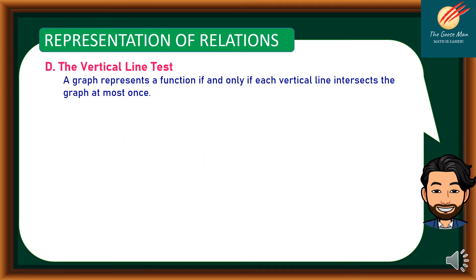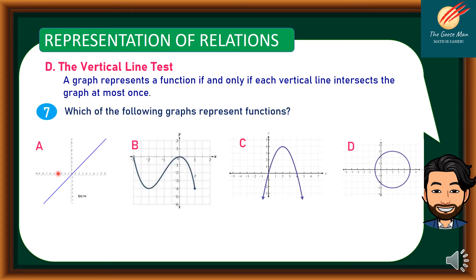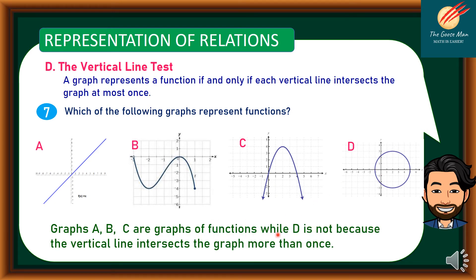The fourth type of representation is the vertical line test. A graph represents a function if and only if each vertical line intersects the graph at most once. Looking at graphs a, b, c, and d: a vertical line touches graphs a, b, and c only once each. However, for graph d, the vertical line touches the graph at two points. So graphs a, b, and c are graphs of functions, while d is not because the vertical line intersects it more than once.